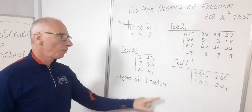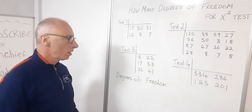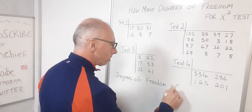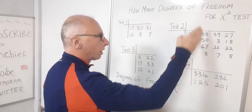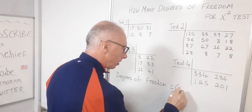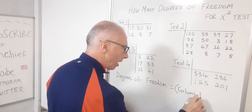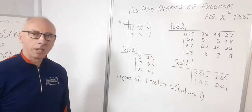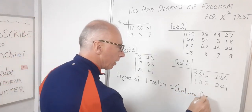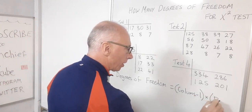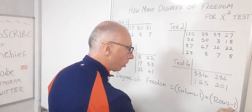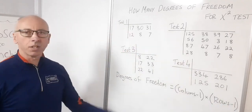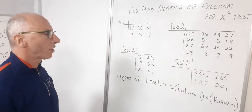So how we calculate degrees of freedom is: we take the number of columns and subtract one, then multiply this by the rows minus one, and that gives us our degrees of freedom.